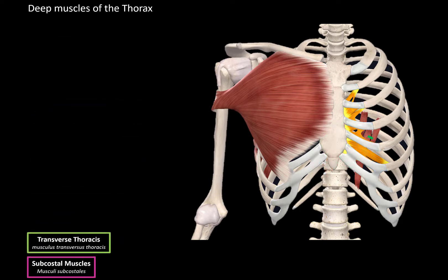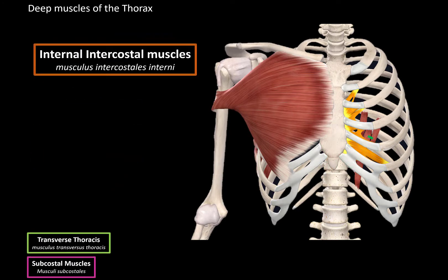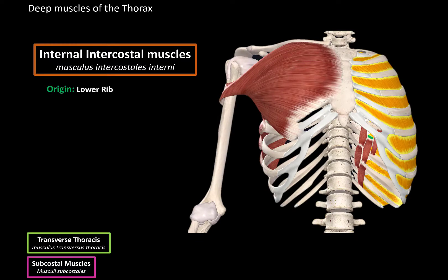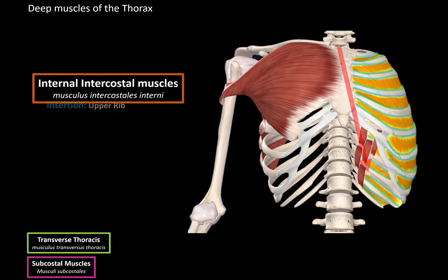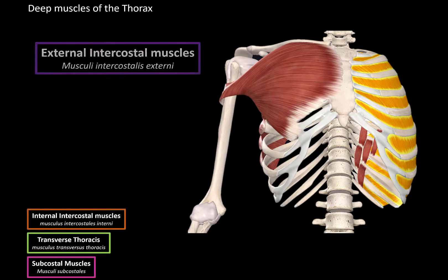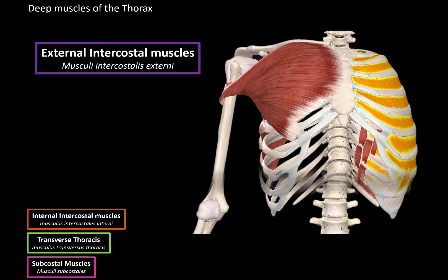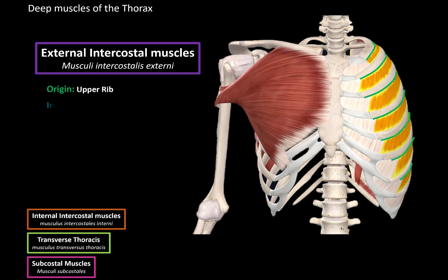Then there are the internal intercostal muscles, which are here between the ribs. These muscles originate from the lower rib and they insert into the upper rib. When they contract, they pull the chest down to aid with expiration. Superficially to the internal intercostal muscles are the external intercostal muscles — they originate from the upper rib and insert at the lower rib. These muscles elevate the thorax to help with inspiration, expanding the thoracic cavity to bring air in.